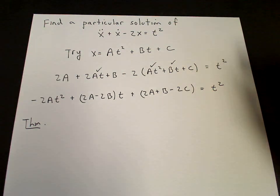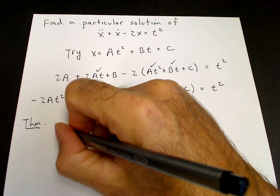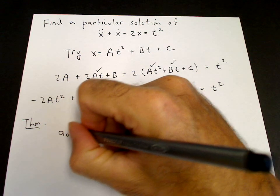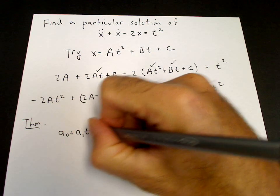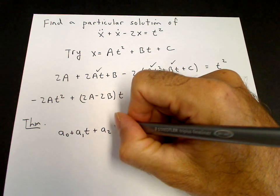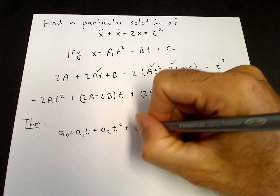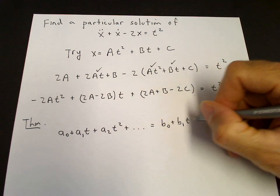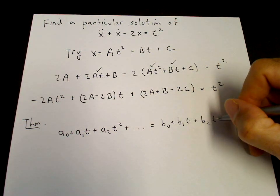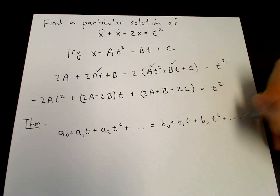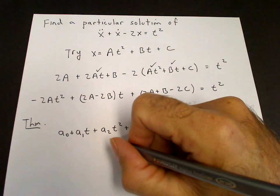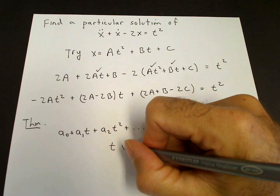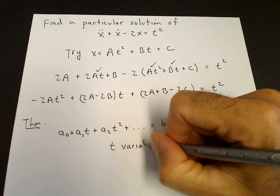That one can derive from calculus. Notice that if you have some polynomial a0 plus a1t plus a2t squared plus dot dot dot equals b0 plus b1t plus b2t squared plus dot dot dot, and t is a variable, meaning it can vary.